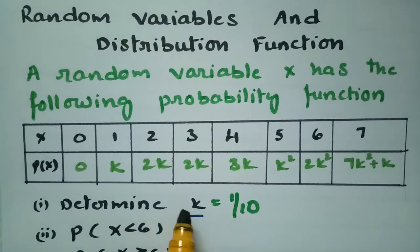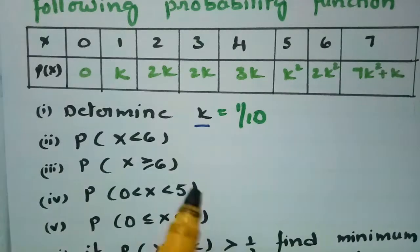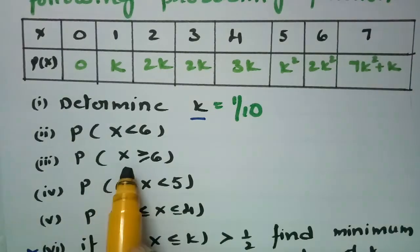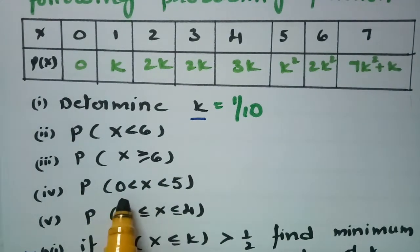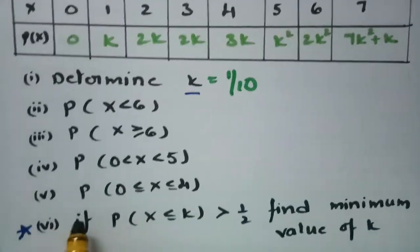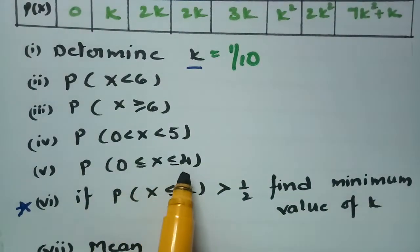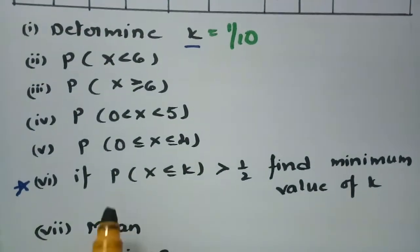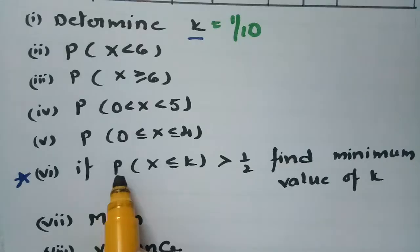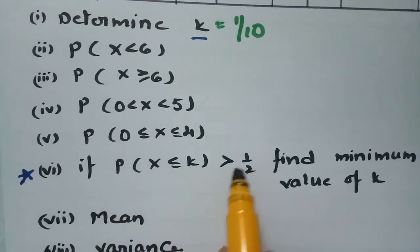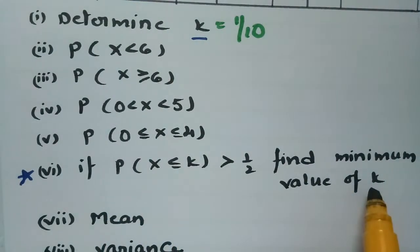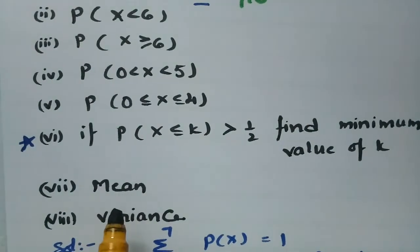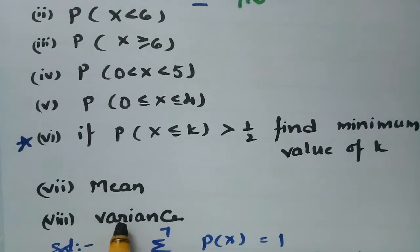First of all, we have to determine the value of k. Next, we need the probability of X less than 6, the probability of X greater than or equal to 6, probability of 0 less than X less than 5, probability of 0 less than or equal to X less than or equal to 4, and the probability of X less than or equal to k is greater than half — find the minimum value of k. We also have to find the mean and the variance.